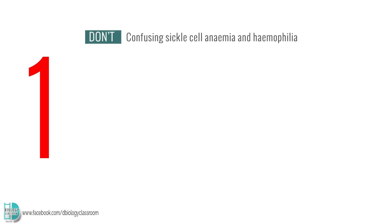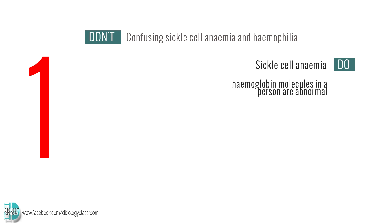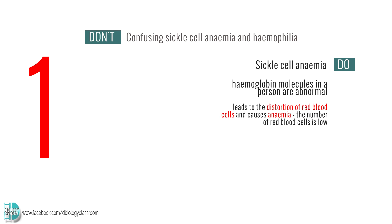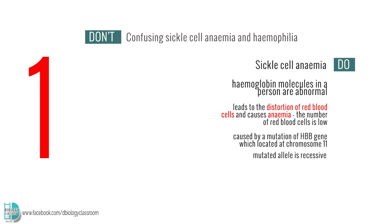Number 1: Confusing sickle cell anemia and hemophilia. Sickle cell anemia is a disease where the hemoglobin molecules in a person are abnormal. This leads to the distortion of red blood cells and causes anemia, where the number of red blood cells is low. It is caused by a mutation of the HBB gene, which is located at chromosome 11. The mutated allele is recessive, so this is an autosomal recessive condition.